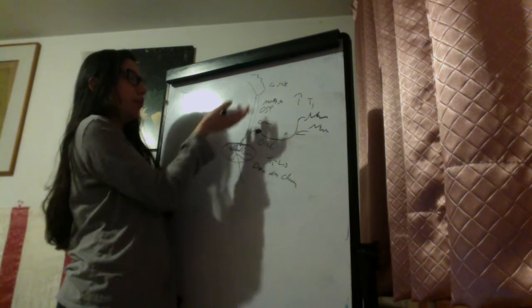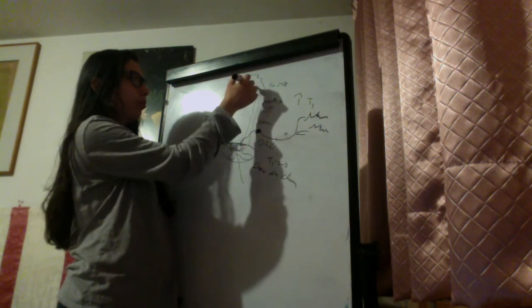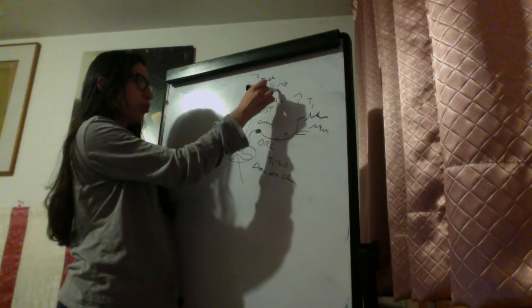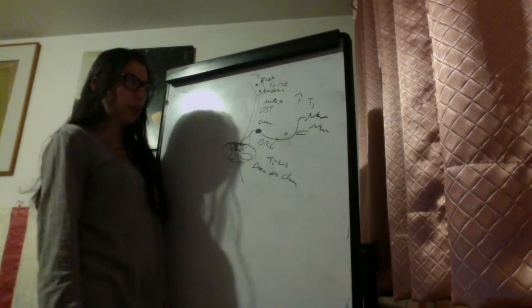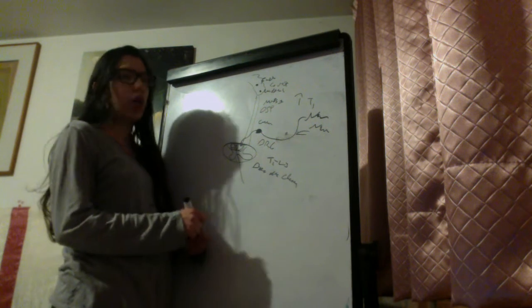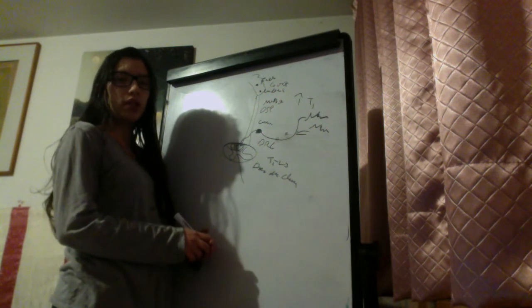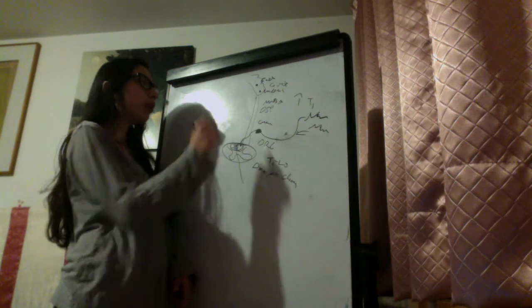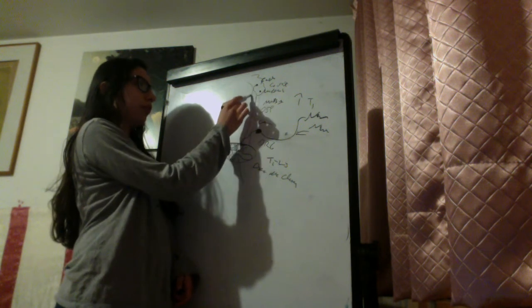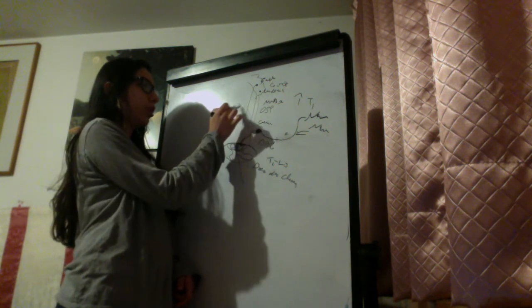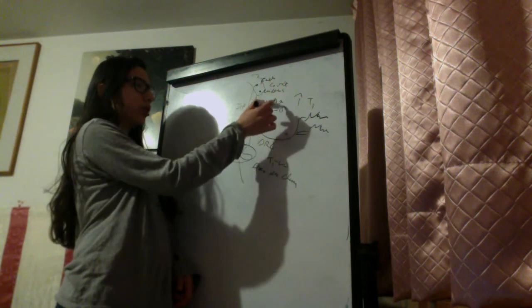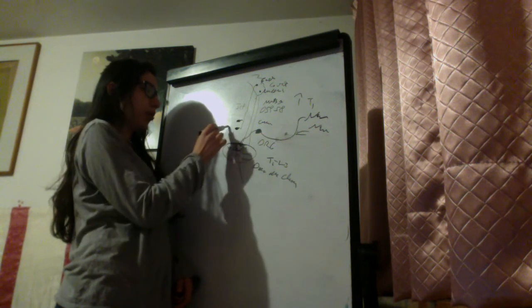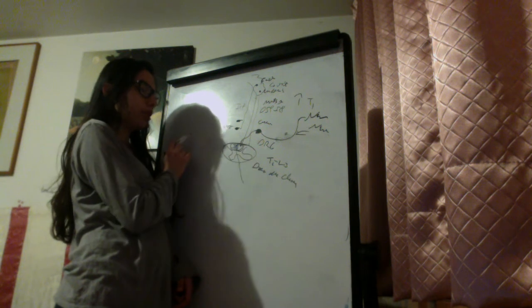The dorsal spinocerebellar tract ends at the fastigial nucleus, and the cuneocerebellar tract ends at the emboliform and globus nuclei in the paravermal hemisphere. Mossy fibers go to granular cells; granular cells release glutamate to Purkinje cells, and Purkinje cells release GABA to the fastigial nucleus or the emboliform and globus nuclei. Axons from the fastigial nucleus then descend through the inferior cerebellar peduncles and end up in the vestibular nucleus and reticular formation.